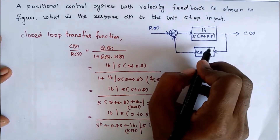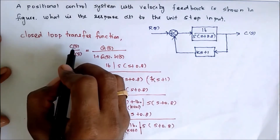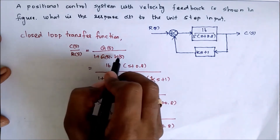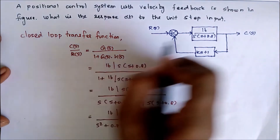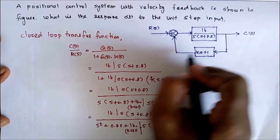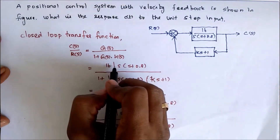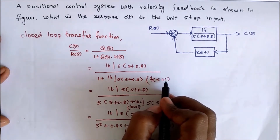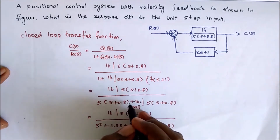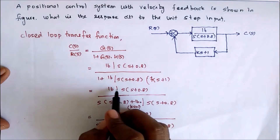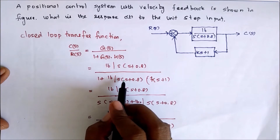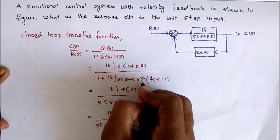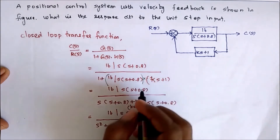We know that for this closed loop system, the transfer function formula is C divided by R equal to G divided by 1 plus G into H. This is G and this is H. We have to substitute G here divided by 1 plus G into H. Now we have to take LCM, keeping the numerator as it is in the denominator side. This is the multiplication of G into H.